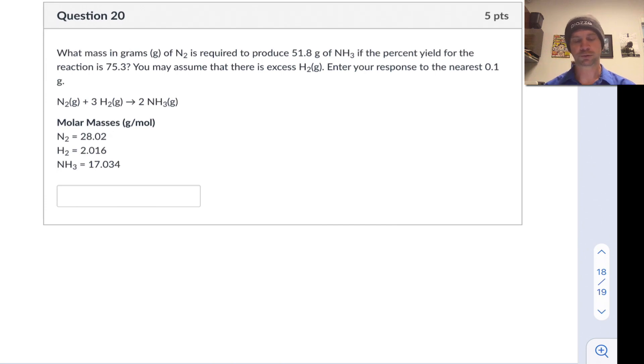We're asked what mass in grams of N2 is required to produce some mass of NH3, here it's 51.8 grams, if the percent yield of the reaction is 75.3 percent. And we can assume here that there's excess H2, so that N2 is the limiting reactant. Enter your response to the nearest 0.1 grams.